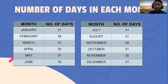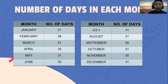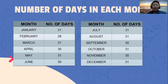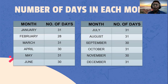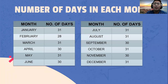These are the number of days in each month. January has 31 days, February has 28, March has 31 days, April has 30 days, May has 31 days, June has 30 days, July has 31, August has 31 days, September has 30 days, October has 31 days, November has 30 days, and December has 31 days. Please recite or memorize these because they will be used in the problems.